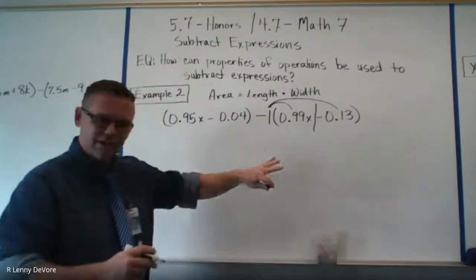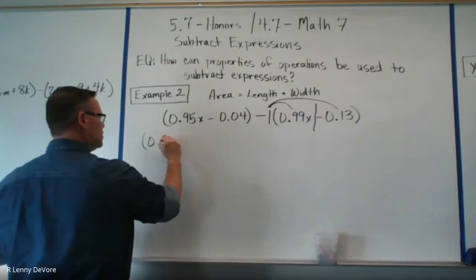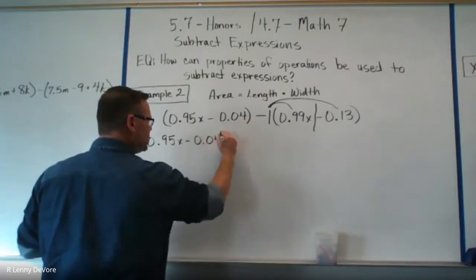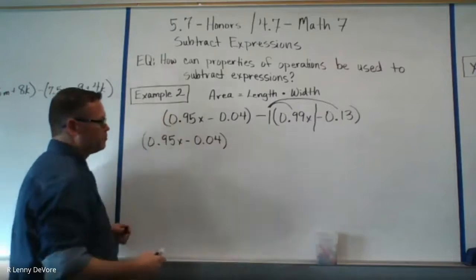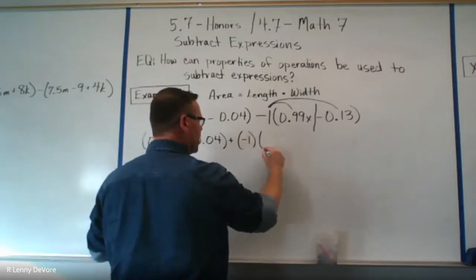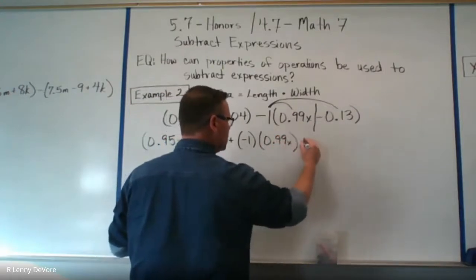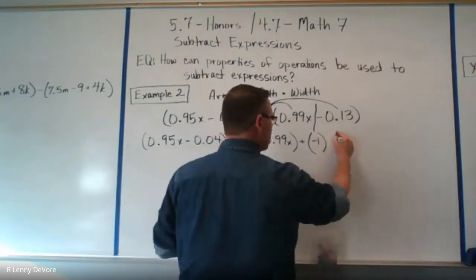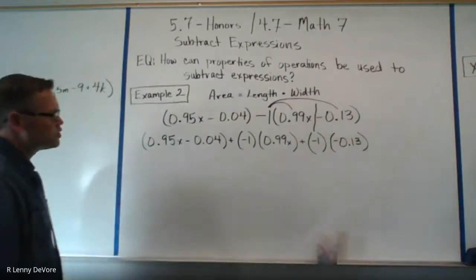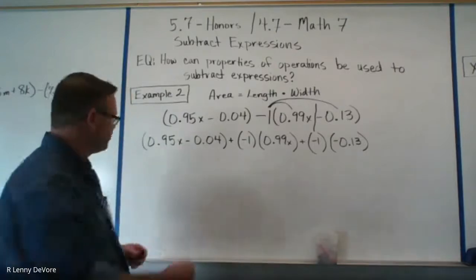I'm going to rewrite this — it'll be kind of wide so you can see it. This first parentheses doesn't change. The terms within this first set of parentheses do not change. The reason for that is there's nothing outside to multiply them by. However, here I'm going to put a plus sign and this becomes a negative 1 multiplied by each term.